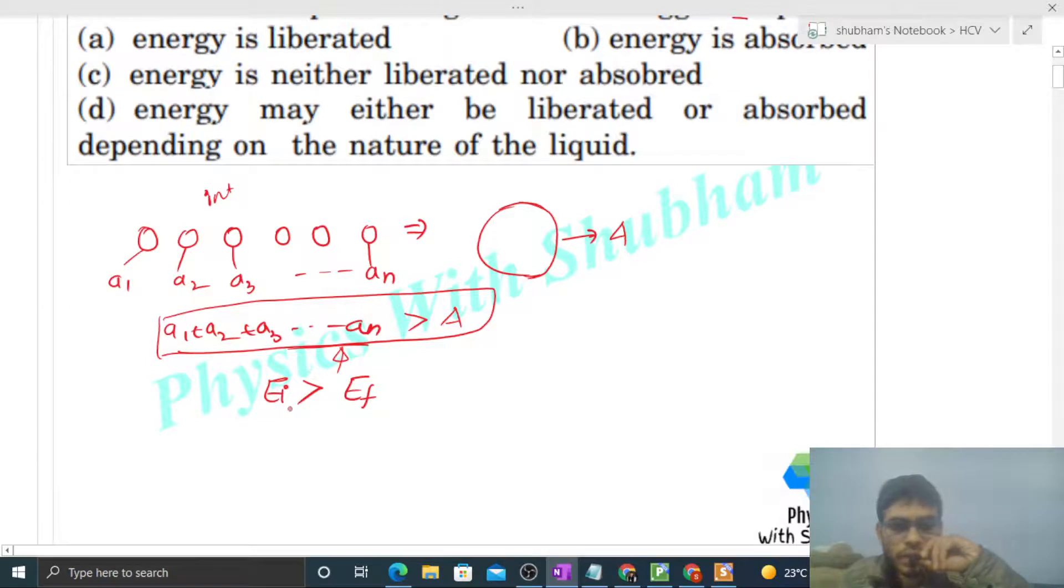It means some energy, some surface energy will be released. We can say some energy will be liberated. That's why the final surface energy is less than the initial surface energy.